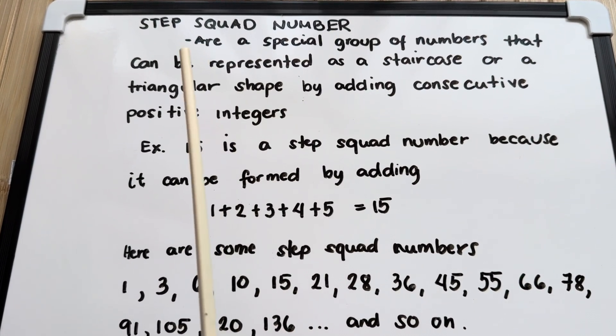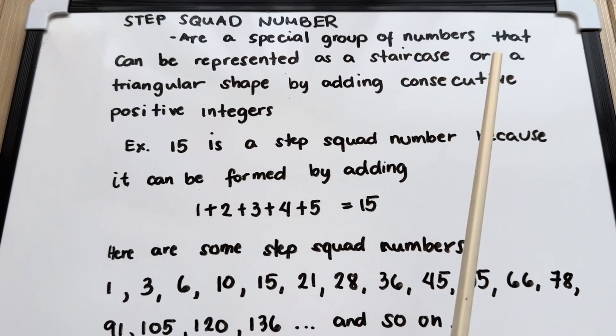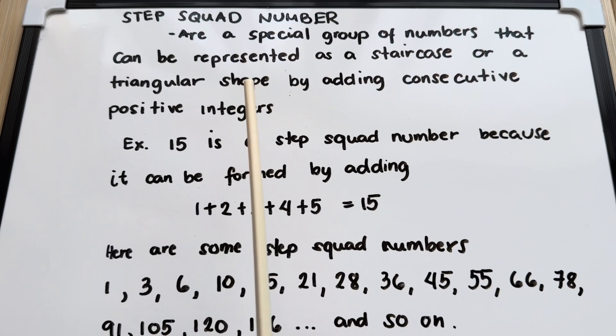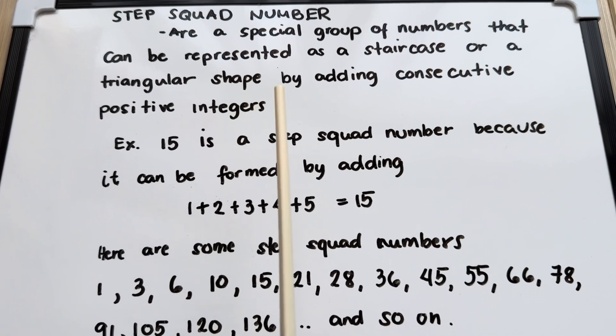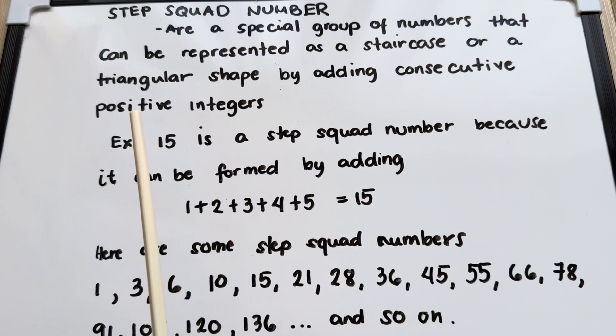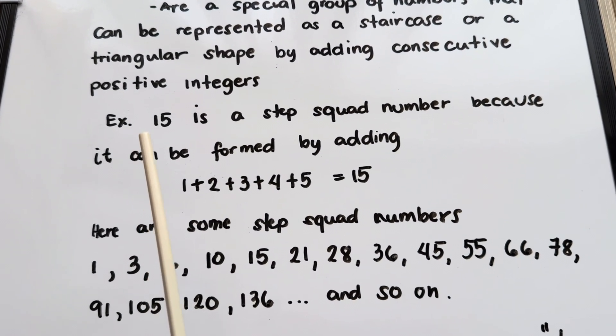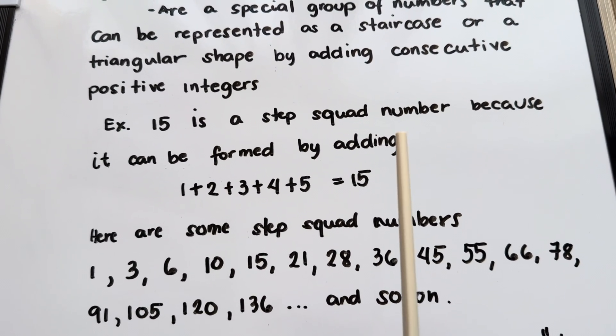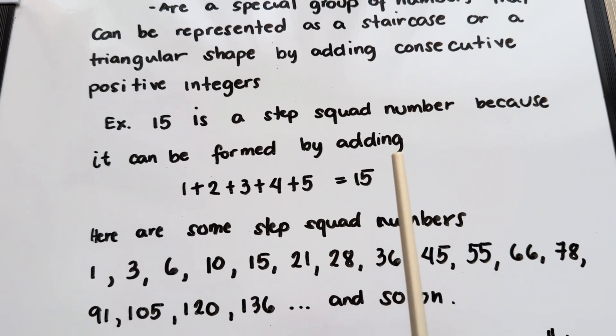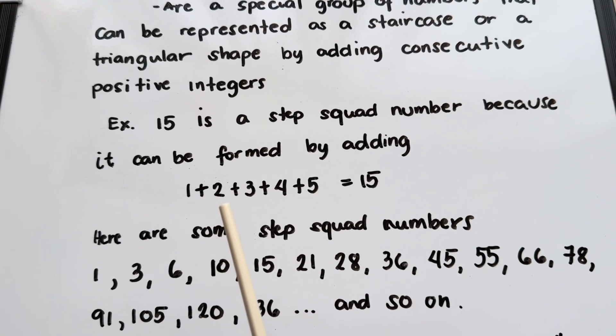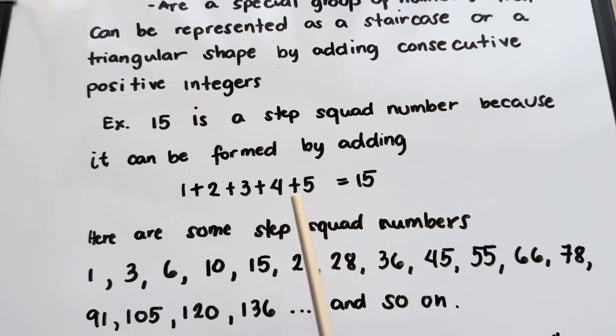StepSquad numbers are a special group of numbers that can be represented as a staircase or a triangular shape by adding consecutive positive integers. Example, 15 is a StepSquad number because it can be formed by adding 1 plus 2 plus 3 plus 4 plus 5 and it is equals to 15.